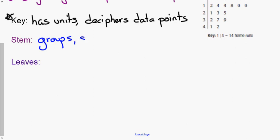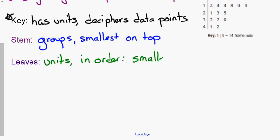Groups like when we made those rods it was a group of ten, that's the idea behind the stem. The smallest stem is on top. Leaves are like the units, so they are listed in order.